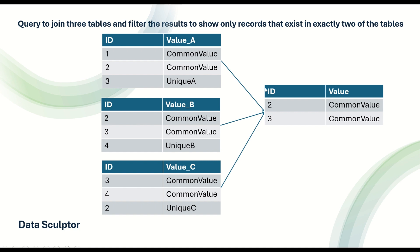The entries which are common in only two of the tables should be shown. For example, id=2 and value A is common — this row is present in both Table A and Table B. And id=3 with common value is present in Table B and Table C. But id=3 with 'unique A' — even though id 3 is present in both tables, 'unique A' is not present in Table B or Table C, so only those two rows should appear.